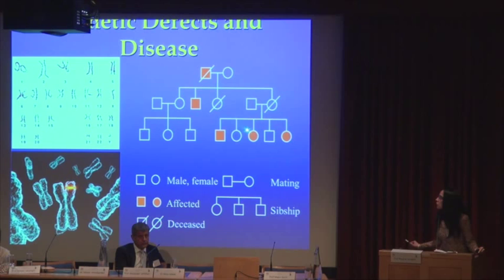This pedigree shows an affected man — the symbols are below — who passed on the disease and the genetic mutation to some of his offspring, who then in turn passed it on to their offspring.